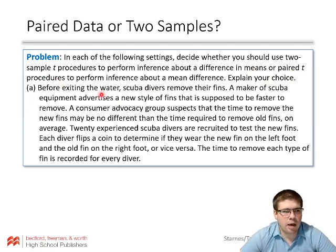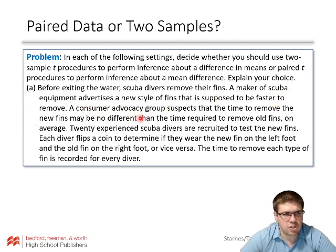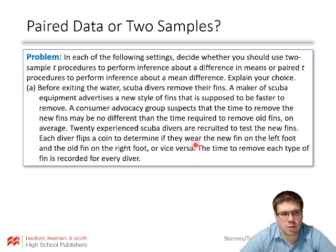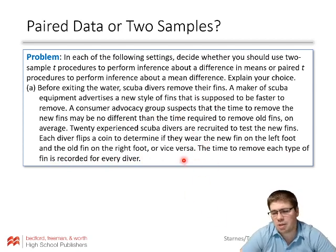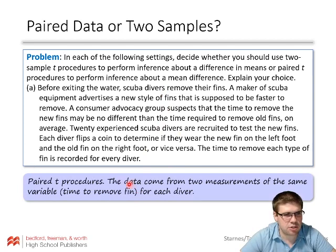Example A: Before exiting the water, scuba divers remove their fins. A maker of scuba equipment advertises new fins that are faster to remove. Twenty experienced scuba divers are recruited; each diver flips a coin to determine whether the new fin goes on the left or right foot, with the old fin on the other foot. The time to remove each type of fin is recorded for every diver. This uses paired t procedures: the data come from two measurements on the same variable — time to remove the fin — for each individual diver.